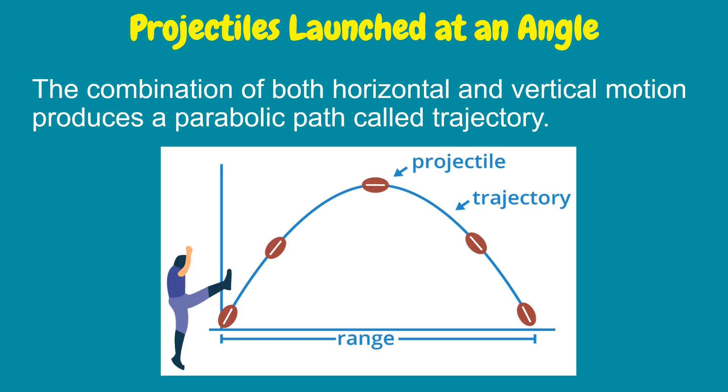When an object is projected from rest at an upward angle, its initial velocity can be resolved into two components. These two components operate independently of each other.